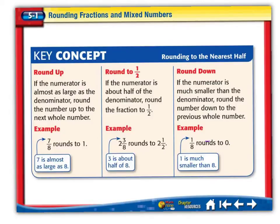Look at the key concepts here. We can round up, round to a half, or round down. Let's talk about rounding up. If the numerator is almost as large as the denominator, round the number to the next whole number. In other words, 7 eighths is almost a whole number. 8 eighths would be a whole number, so 7 eighths rounds to 1.